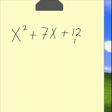The first thing we do is we look at the 12. The factors of 12 are 1 times 12, or 2 times 6, or 3 times 4.